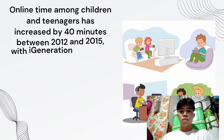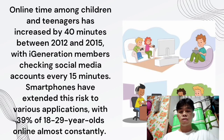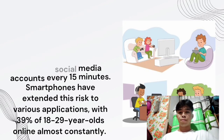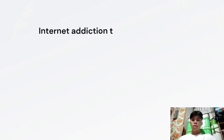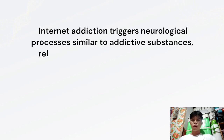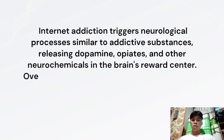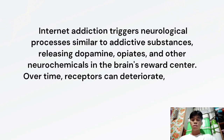Online time among children and teenagers increased by 40 minutes between 2012 and 2015, with iGeneration members checking social media accounts every 15 minutes. Smartphones have extended this risk to various applications, with 39% of 18 to 19 year olds online almost constantly. Internet addiction triggers neurological processes similar to addictive substances, releasing dopamine, opiates, and other neurochemicals in the brain's reward center. Over time, receptors can deteriorate, requiring more stimulation.